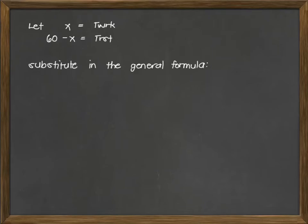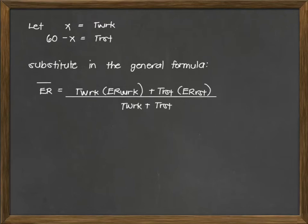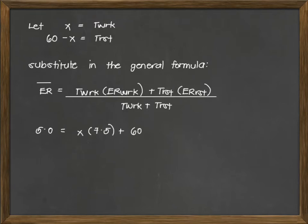For our steps, we substitute in the general formula: ER bar equals T work times ER work plus T rest times ER rest, all divided by T work plus T rest. Since we want to find the value of x that satisfies the recommended value of 5 kcal per minute: 5 equals x times 7.5 plus (60 minus x) times 1.5, all over 60 minutes.